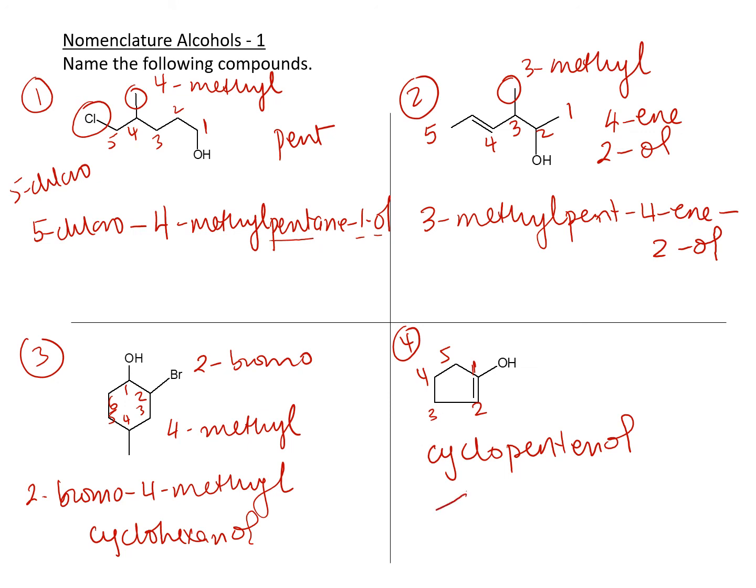If it was not the case, for example, if you had the alcohol here and the alkene over here, now you would say cyclopent-2-ene-1-ol. You still don't have to say 1 for the ol because it's understood. But that's where the alcohol is. I hope it's okay.